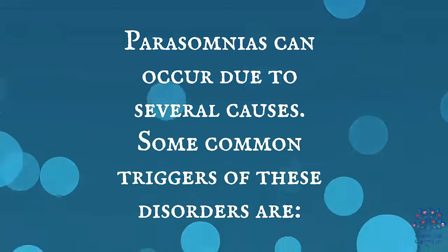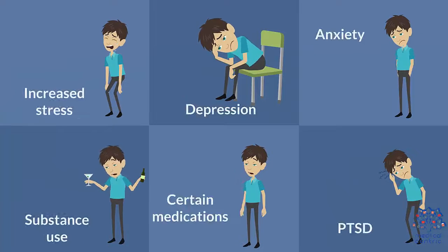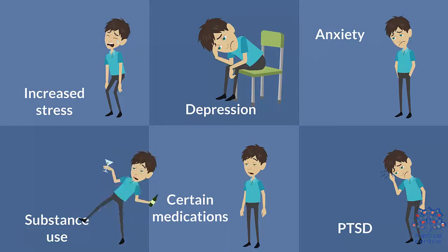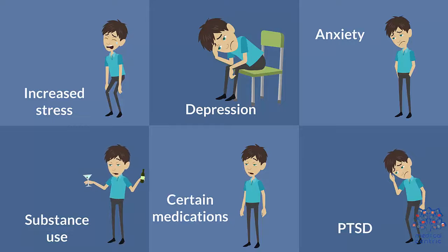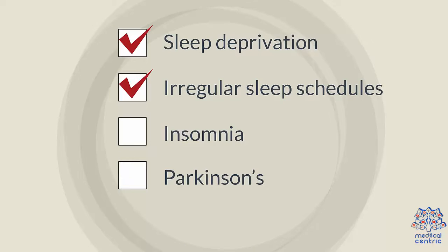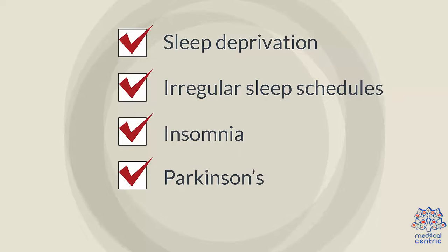Causes: Parasomnias can occur due to several causes. Some common triggers of these disorders are: 1. Increased stress, 2. Depression, 3. Anxiety, 4. Substance use, 5. Certain medications, 6. PTSD, 7. Sleep deprivation, 8. Irregular sleep schedules, 9. Insomnia and other sleep disorders, 10. Neurological conditions such as Parkinson's.